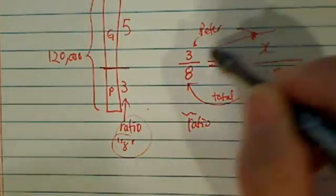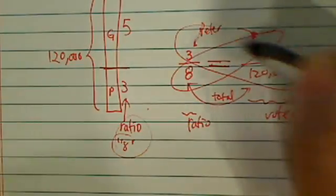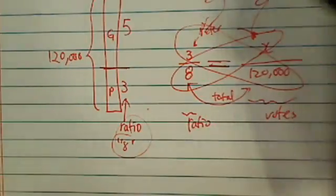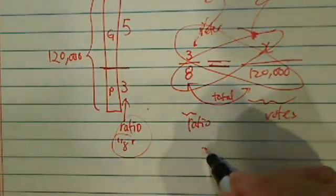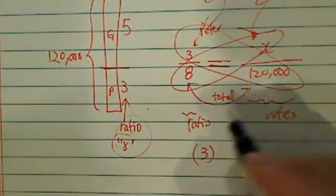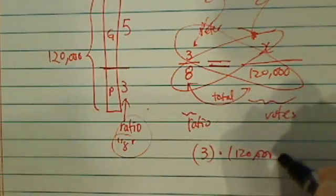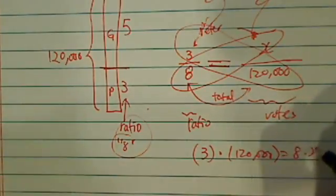From here it's really easy. All you have to do is what we call a butterfly. And then our butterfly is really saying 3 times 120,000 is equal to 8 times x.